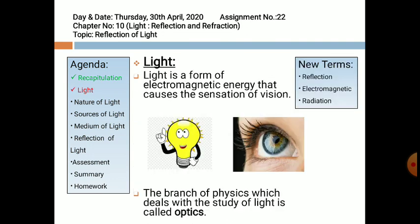Today's topic comprises of three new terms: reflection, electromagnetic, and radiation. Reflection — the bouncing back of light in the same medium after striking a surface is known as reflection. Electromagnetic refers to something relating to the interrelationship of electric current or electric field with magnetic field; both phenomena take place simultaneously. The third new term is radiation — the emission of energy as electromagnetic waves is known as radiation.